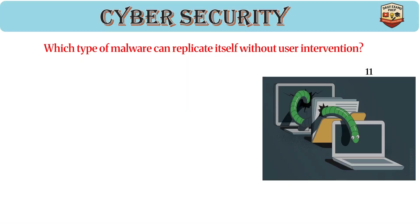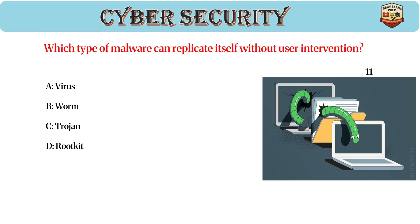Which type of malware can replicate itself without user intervention? Answer: B, worm. Worms spread without user action, exploiting vulnerabilities in network services, and can cause bandwidth congestion and system crashes.